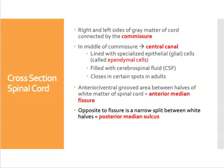In addition to the commissure and the central canal, there are two other gross anatomical features of the spinal cord. One is on the anterior or ventral surface, and one is on the posterior or dorsal surface. On the anterior surface, there is a groove — an actual split between the two halves called the anterior median fissure. There's also a split on the posterior side, but it's much more narrow and is called the posterior median sulcus.